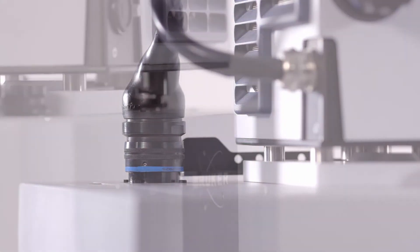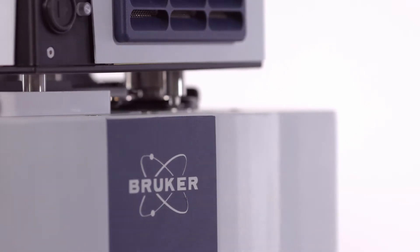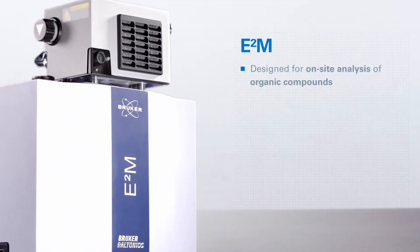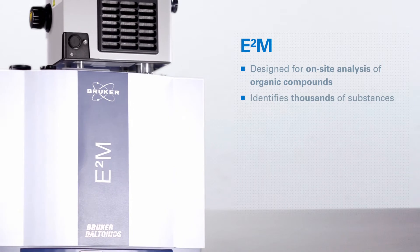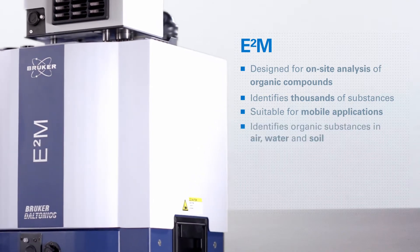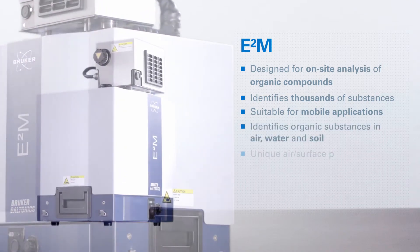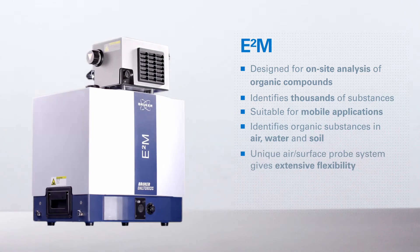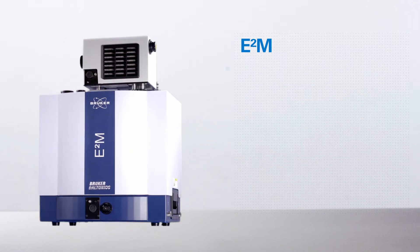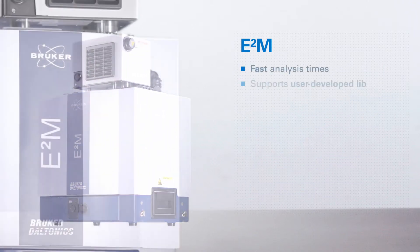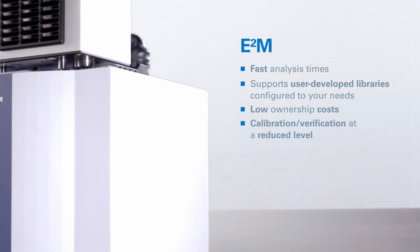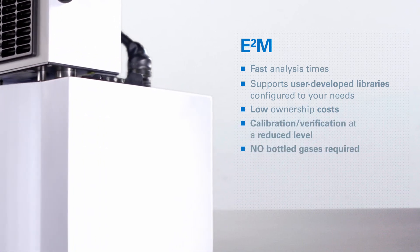The E2M is a mobile, compact, lightweight and rugged GC-MS with the following key features: designed for on-site analysis of organic compounds, identifies thousands of substances, suitable for mobile applications, identifies organic substances in air, water and soil, unique air surface probe system giving extensive flexibility, permanent vacuum system ensures rapid start-up, fast analysis times, supports user-developed libraries configured to your needs, low ownership costs, calibration verification at a reduced level, and no bottled gas required.